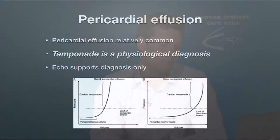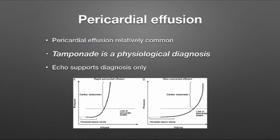Pericardial effusion is a relatively common finding, and it's something you will see relatively often in the intensive care unit. One of the main things we're looking for is trying to determine if there are signs of tamponade. The most important thing to emphasise is that tamponade is a physiological diagnosis — echo only supports the diagnosis. For me, the most important sign is whether someone is short of breath, and we're also expecting to see a raised JVP and hypotension.